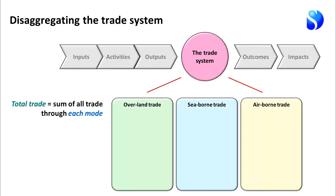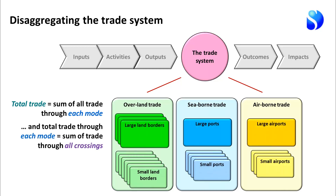We looked in the first presentation at ways of understanding the trade system, recognising that trade takes place across individual borders. The trade that takes place in total arises from the sum of all trade that occurs through each mode — the sum of overland trade, seaborne trade, airborne trade and trade in services. Each of those is the sum of everything that happens through each specific crossing: each land border, each port, each airport. There are larger borders and ports and smaller borders and ports.